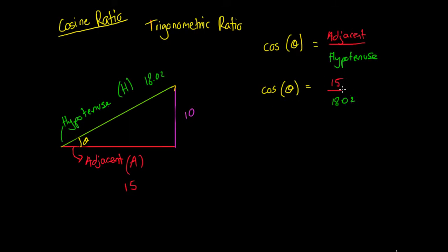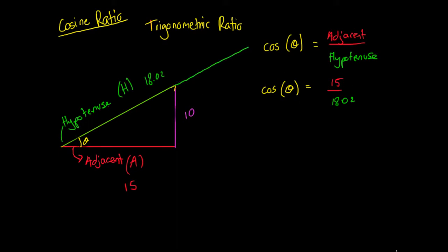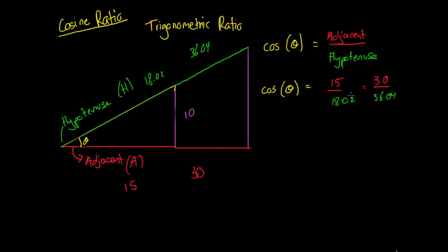So what the cosine ratio says is that this angle can only occur in one way such that our side length of 15 divided by our side length of 18.02 — there's only one angle that will allow us to have this ratio. If we change the length of our hypotenuse but keep the length of our adjacent side the same, then it's going to change this angle. But if we double the length of our hypotenuse and also double the length of our adjacent side — so the hypotenuse goes from 18.02 to 36.04 and our adjacent goes to 30 centimetres — then the angle is going to stay the same because the ratio is the same.